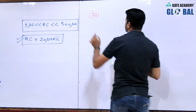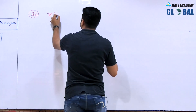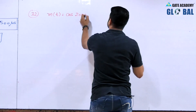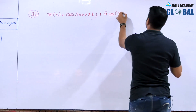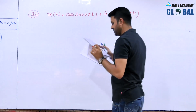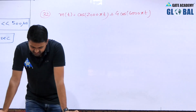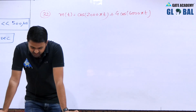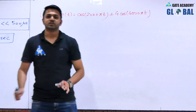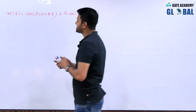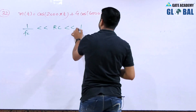Question number 32 — a very simple question. A message signal m(t) = cos(2000πt) + 4cos(4000πt) modulates the carrier c(t) to produce an AM signal with carrier frequency 1 megahertz. For demodulating the generated AM signal using an envelope detector, the time constant should satisfy the same condition: 1/fc << RC << 1/fm.